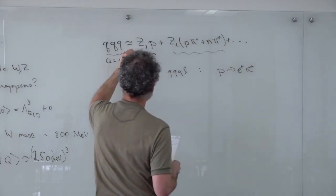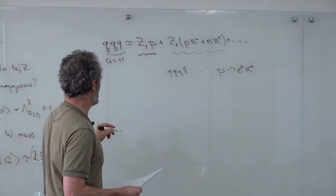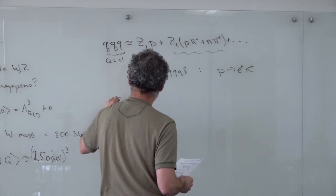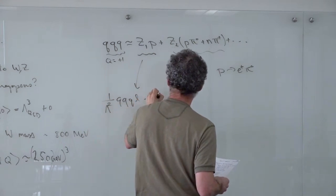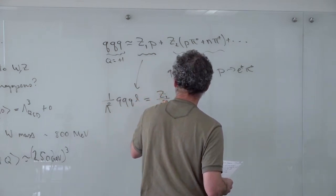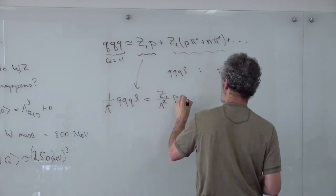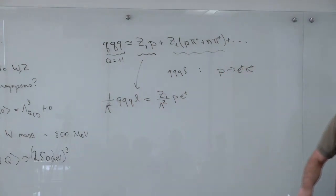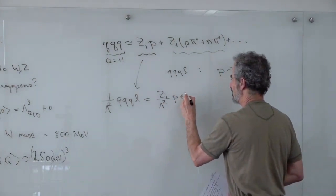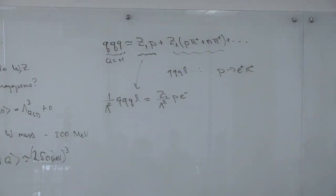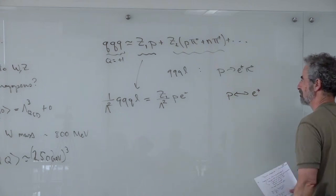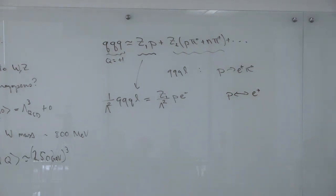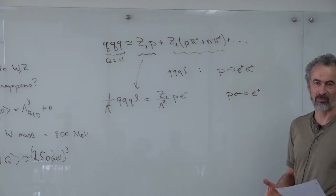But what happens if we look at the other part? Then QQQL · (1/Λ²) goes to Z₁/Λ² times p·e⁻, when you look at a particular SU(2) combination. This looks like mass mixing between the proton and the positron — which is weird, but this operator violates baryon number and lepton number, so that's allowed.